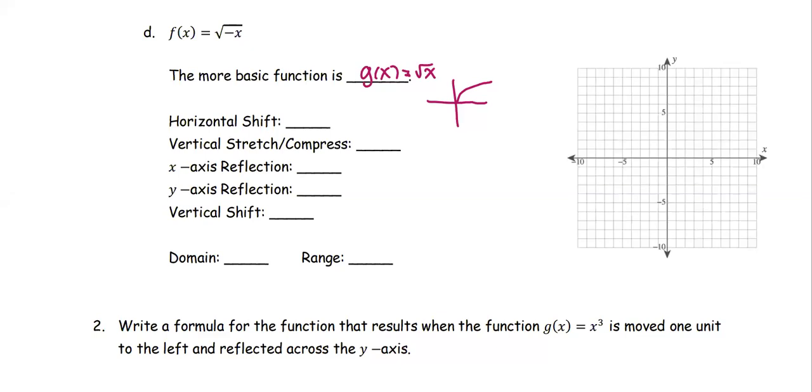The horizontal shift - this one has nothing in there, so basically plus 0. So going to be none.